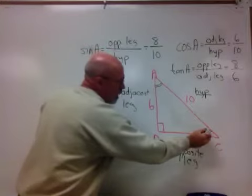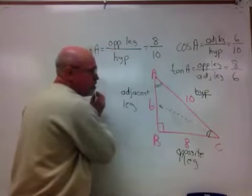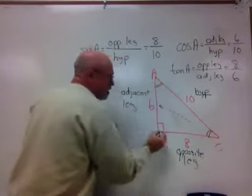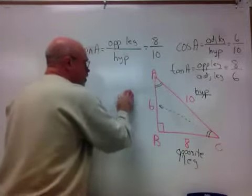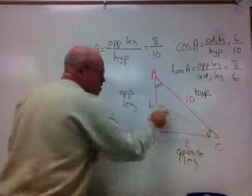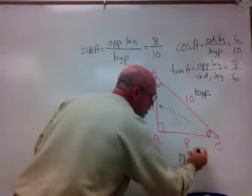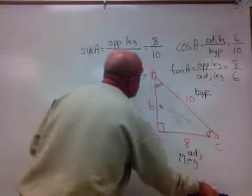If I'm at C, opposite is the 6. It's the one across the triangle. The other side over here will be adjacent this time. So this is the opposite leg. When you position yourself at angle C, 8 now is the adjacent leg.